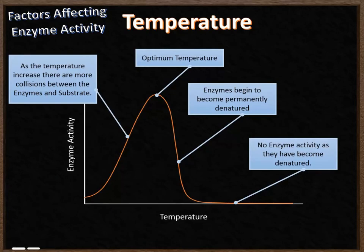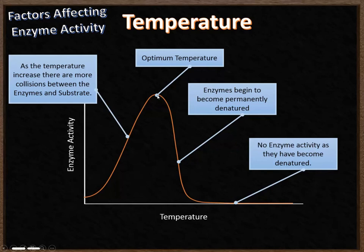Now let's look at graphs showing factors that affect enzyme activity, starting with temperature. As temperature increases, there are more collisions between enzymes and substrate because particles are moving faster, so the rate of reaction increases. We then reach an optimum temperature — the best temperature for the enzyme to work at. You can identify this from a graph by finding the peak. After this point, enzymes become permanently denatured as the active sites are changed by heat. As temperature continues to rise, enzyme activity drops to zero — all enzymes have been denatured.